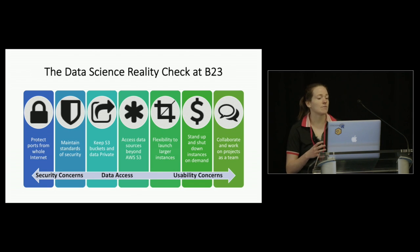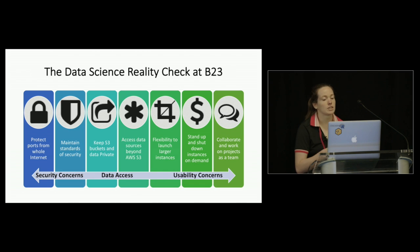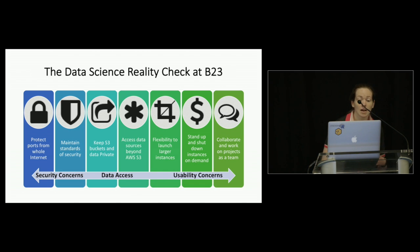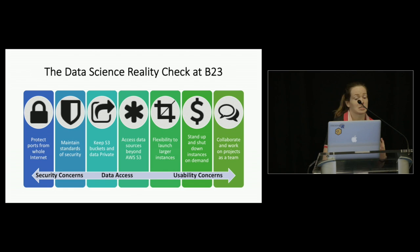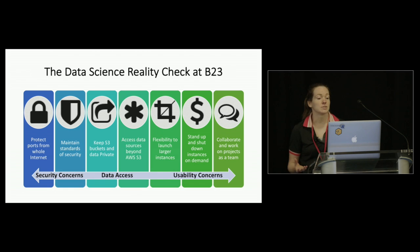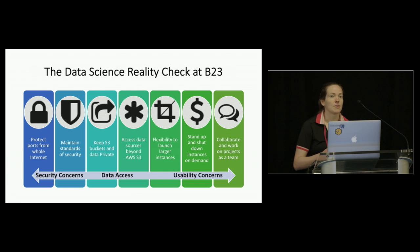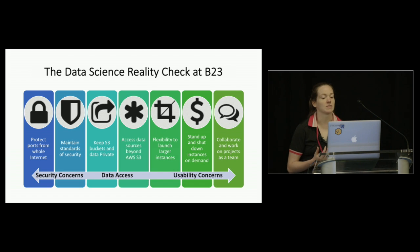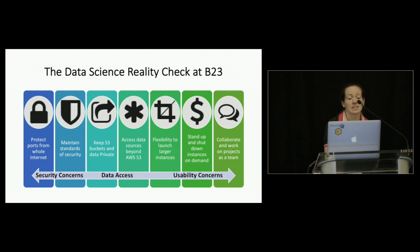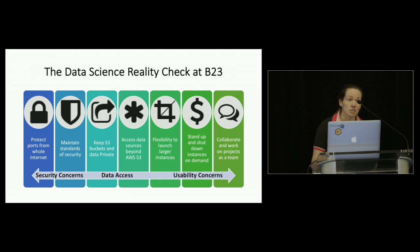Finally, we have usability concerns. We'd like the ability to be more flexible in launching larger and smaller instances in the cloud, to stand up and shut those instances down so that AWS isn't charging us a large bill when we're not using them, and as a team, to collaborate when working in the cloud together. Unfortunately, this is kind of where the font of blog information on the internet starts to dry up when you're trying to solve these questions.